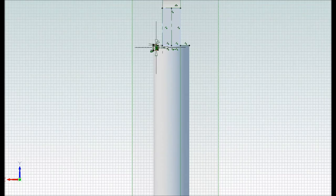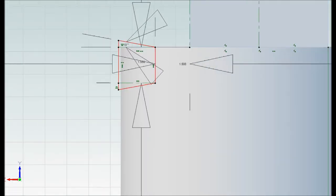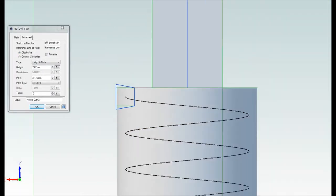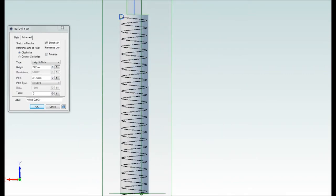Next, a small sketch is created that will be used to create the threading. The threading is then created using the sketch and a spiral function in the CAD program.